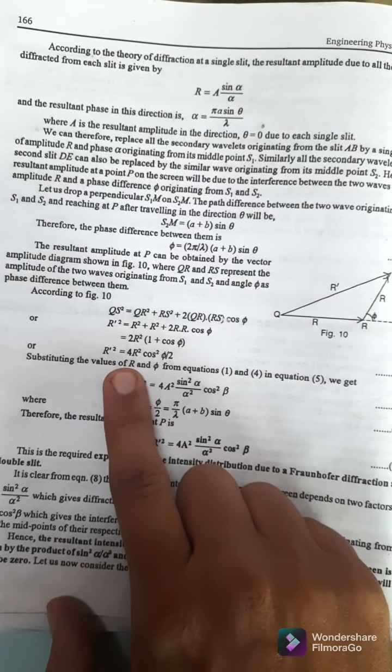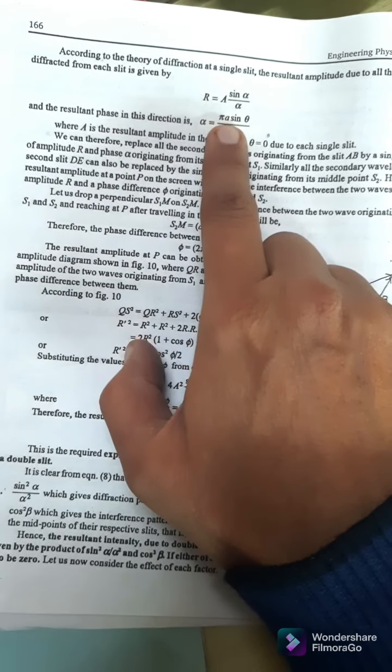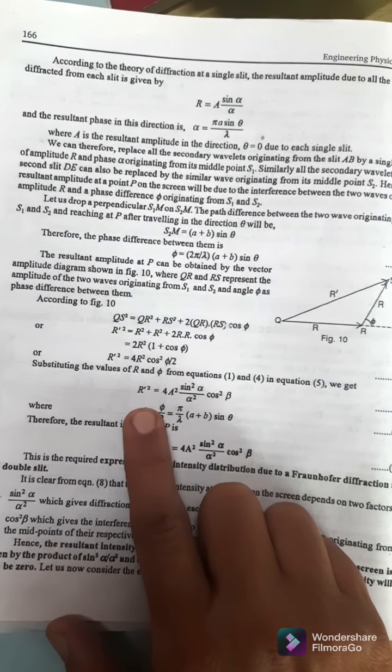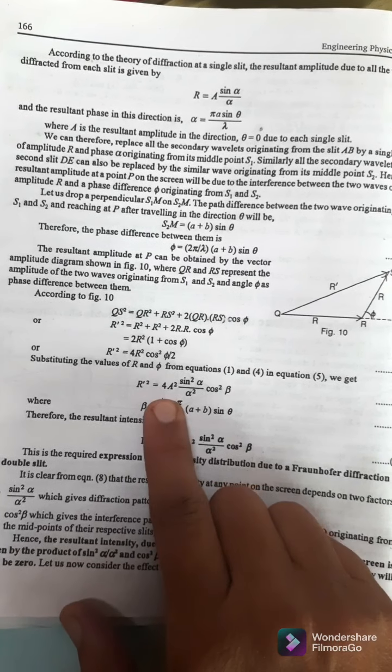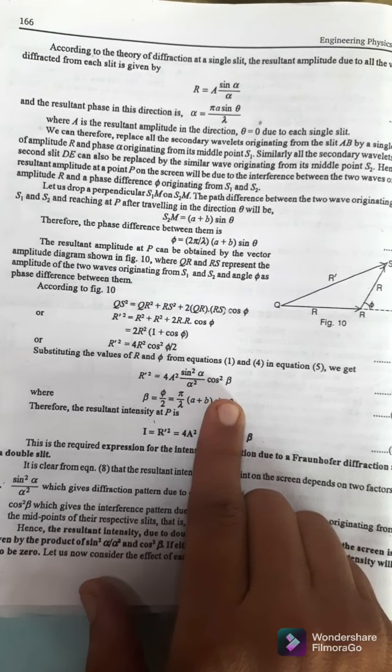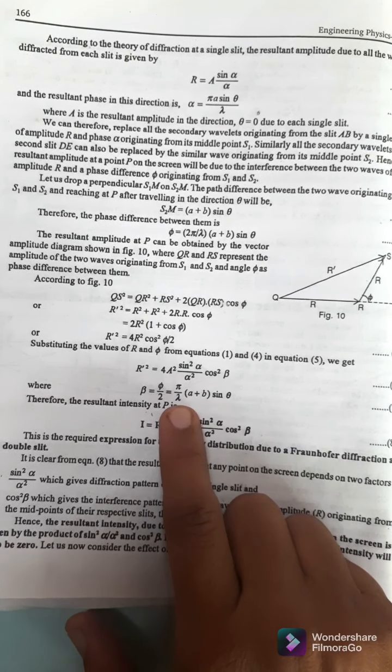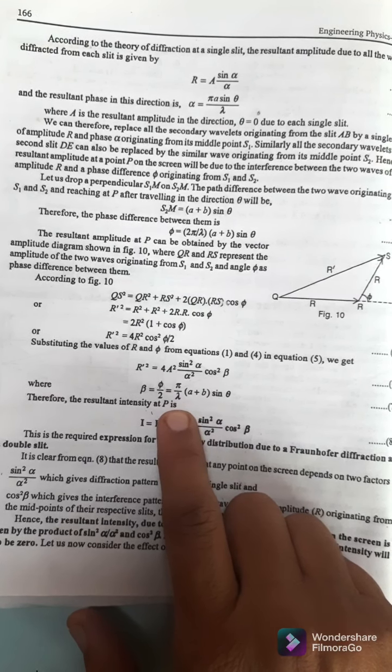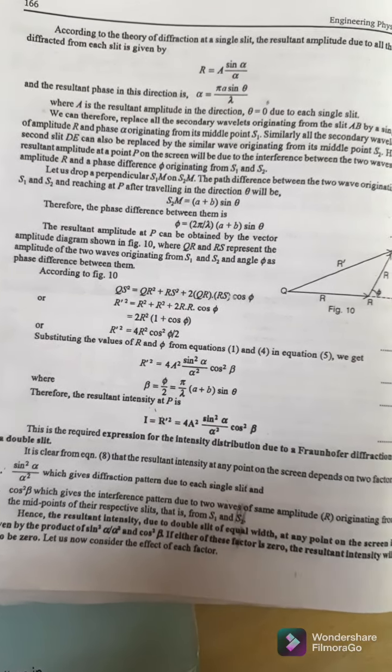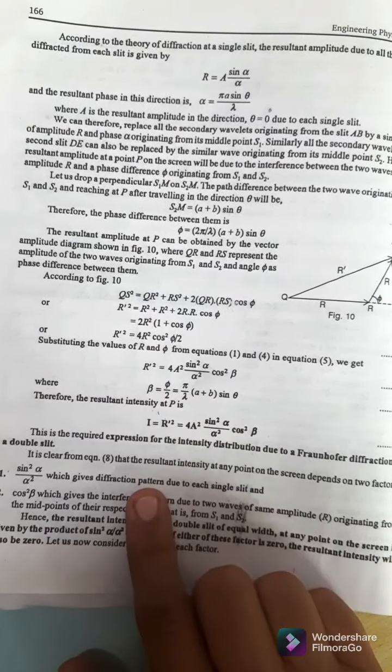R1 equals A sin alpha upon alpha. The value is A dash squared equals 4 A squared sin squared alpha upon alpha squared times cos squared beta, where beta equals phi by 2, which equals pi upon lambda times (A plus B) sin theta. Using the intensity formula I equals A squared, we have the expression in this way.